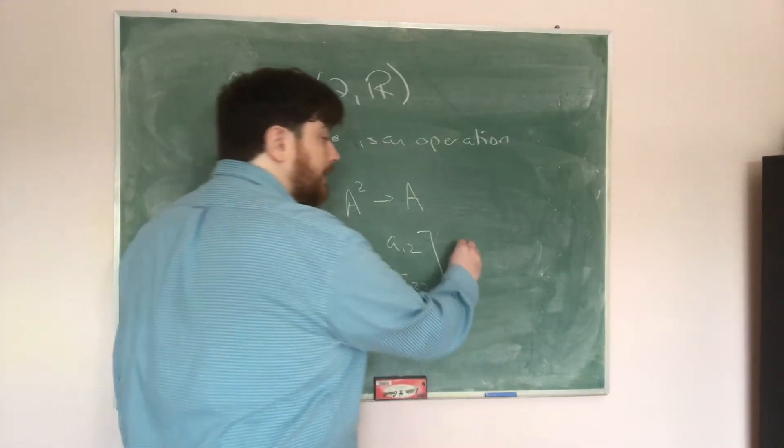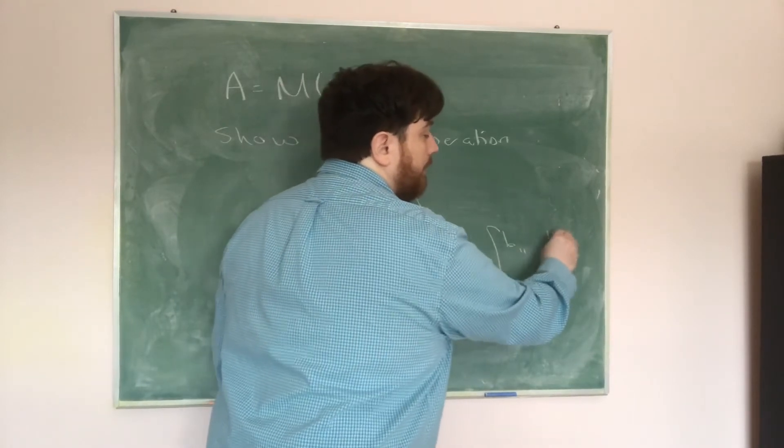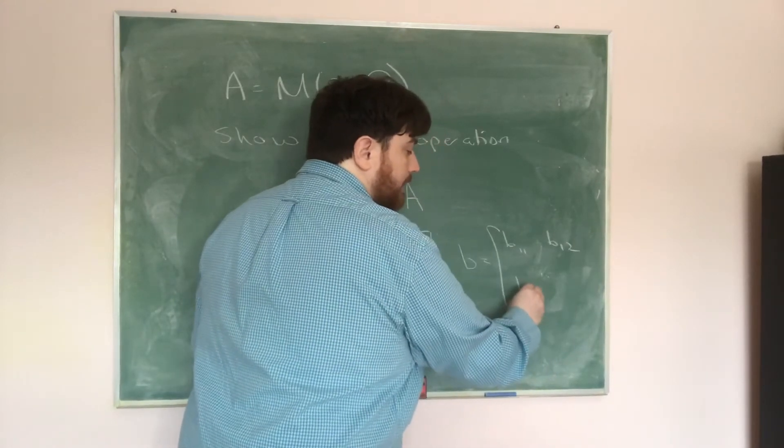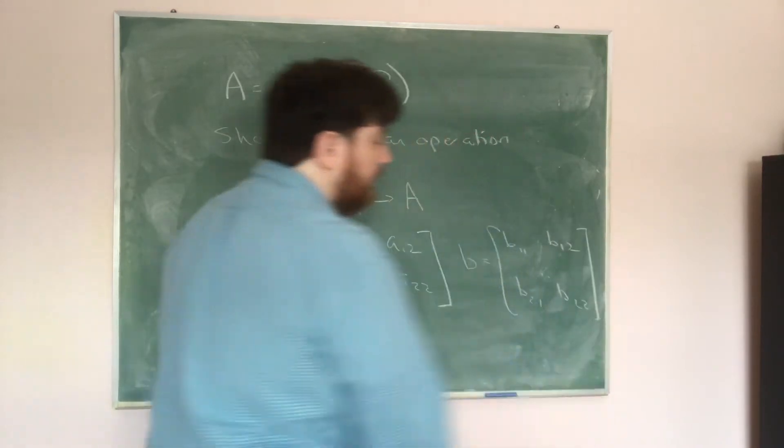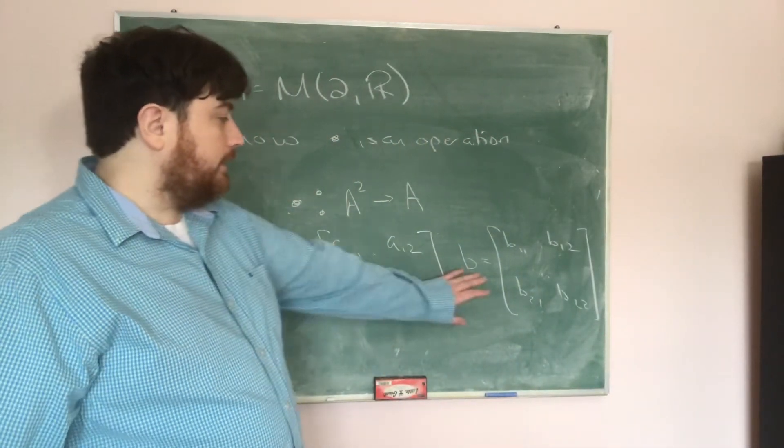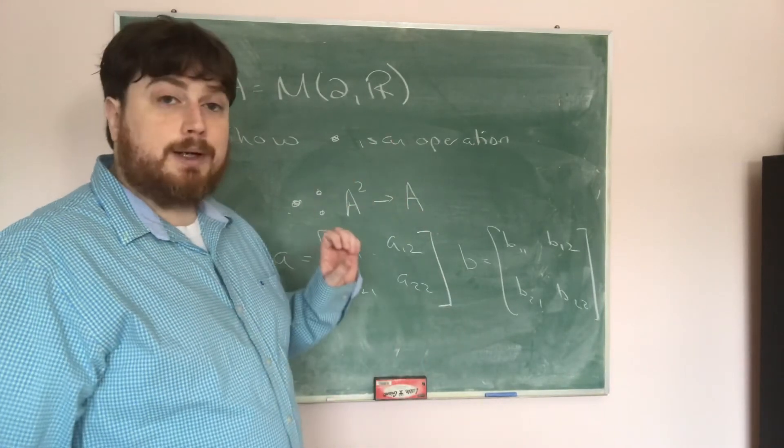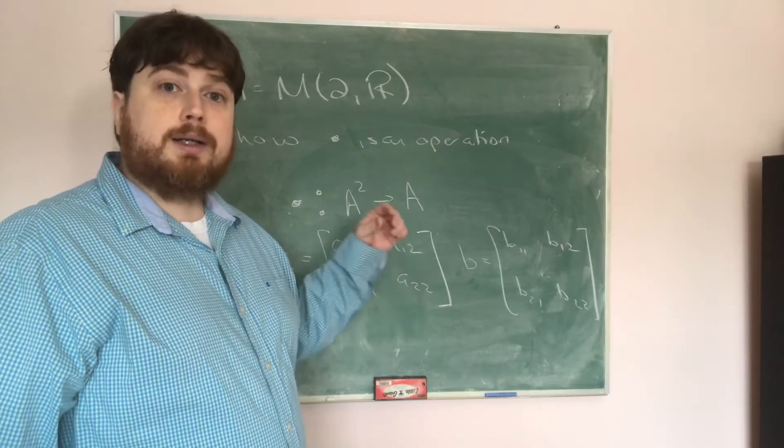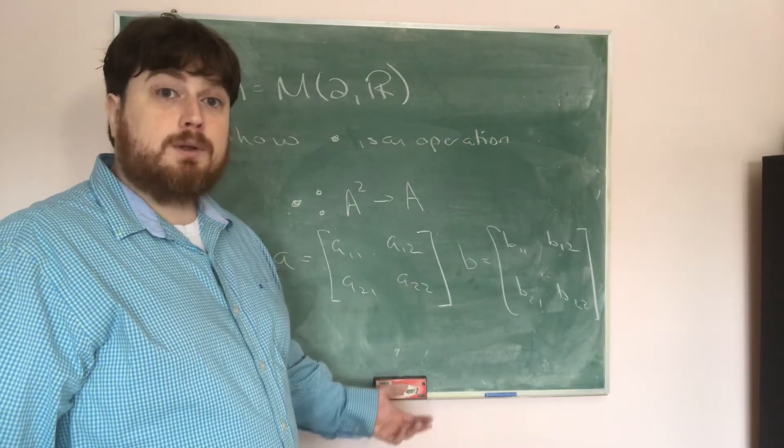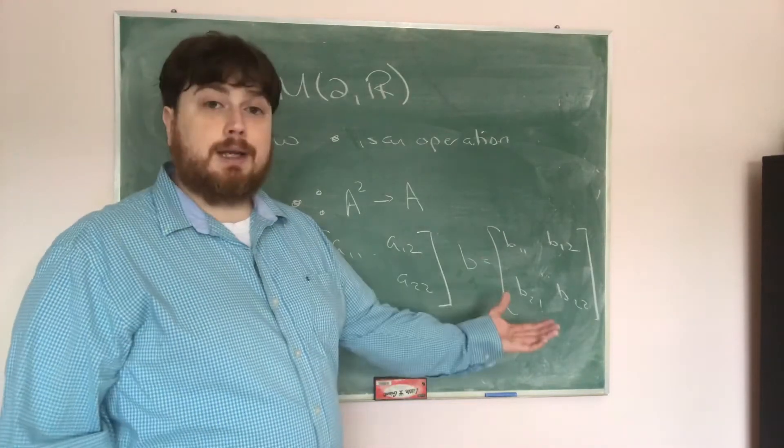If I pick another element in there, let's call it B. That's going to look the same except it will be B sub 1 1, B sub 1 2, B sub 2 1, B sub 2 2. What I need to know is that if I take A times B, then I'm going to end up with exactly one answer in A. I can't get out two answers. I can't get out zero. I get out exactly one thing in A. So we really just have to find, what is A times B?